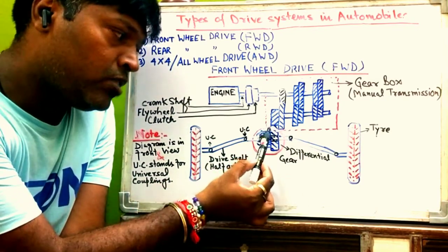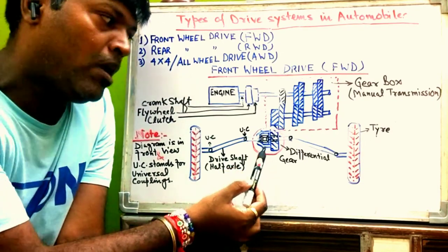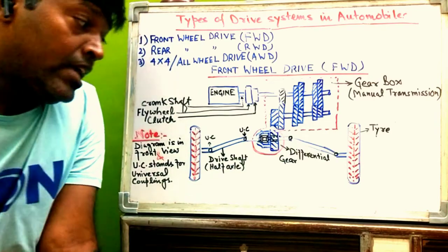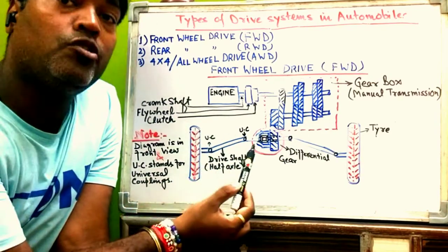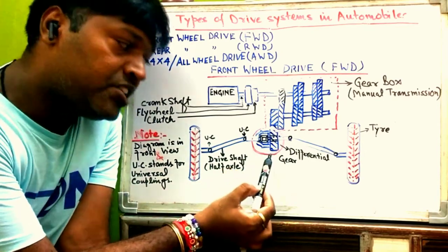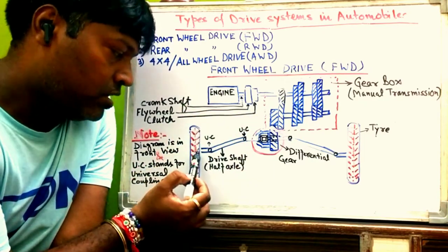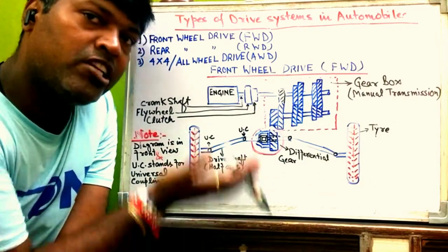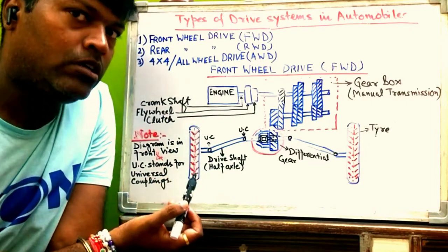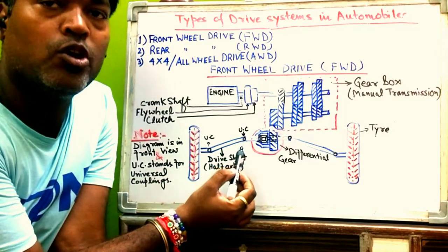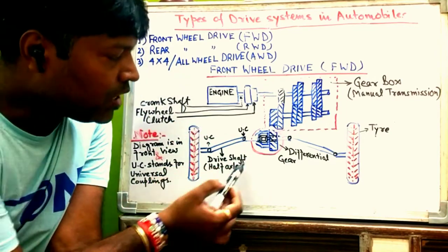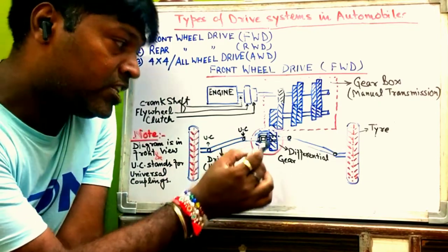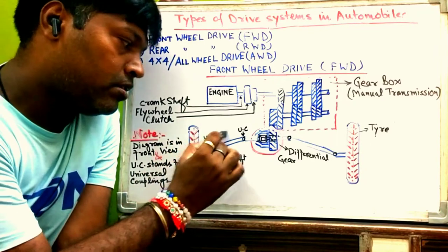The power from the gearbox comes to the differential gear and splits to the two half axles on the left and right. The UC — universal coupling — is needed because the differential gear level is quite above the center of the tires. To transmit power at some inclination or angle, we need the universal coupling. With the differential gear we split the power and with the universal coupling we drive the shafts at an angle.